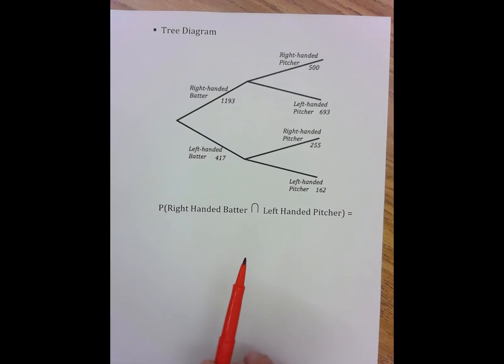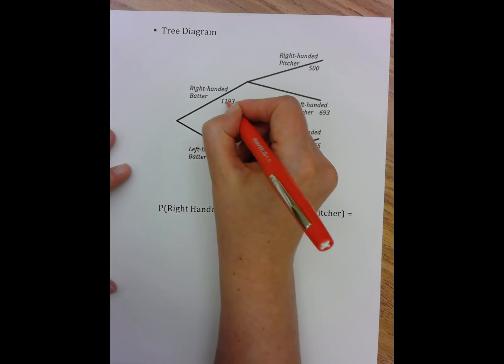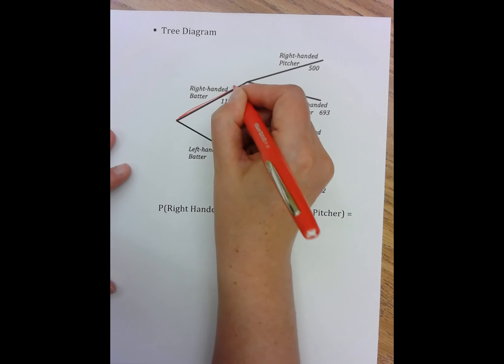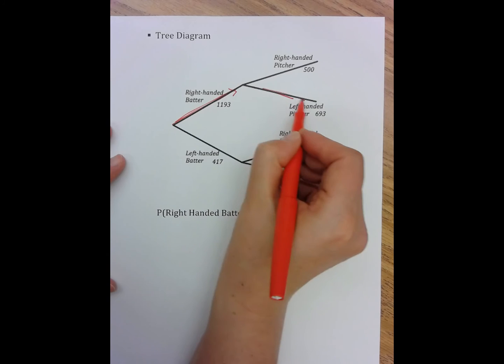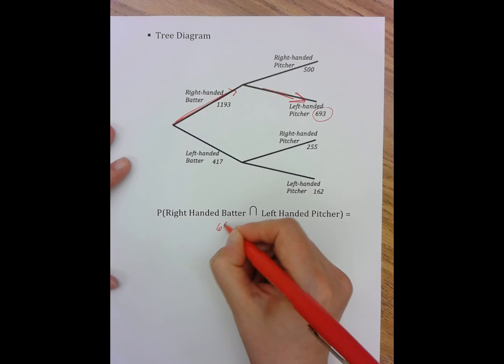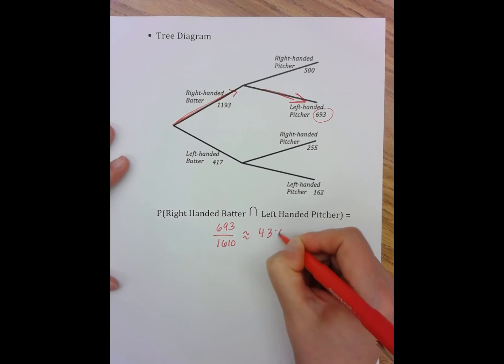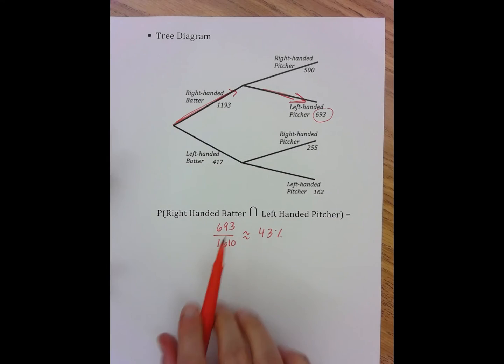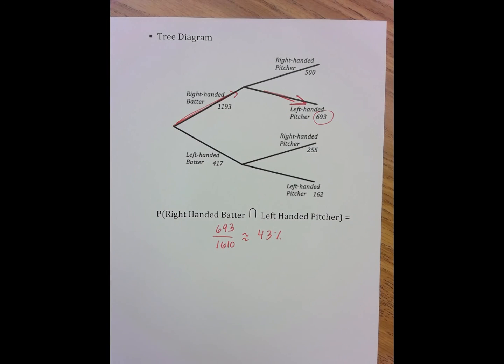So the first thing I need to do is I need to look at my first split. So my first split is about batters. So in my first split, I want to look at right-handed batters. So that's these people. So I'm following this path first. Then I need the left-handed pitchers. So that means I'm following this path next, which means I have 693 over my total of 1610, which is approximately 43%. So it doesn't matter which one of these is written first. I have to go with whatever the first split is and follow that path to the number of people I am actually looking for.